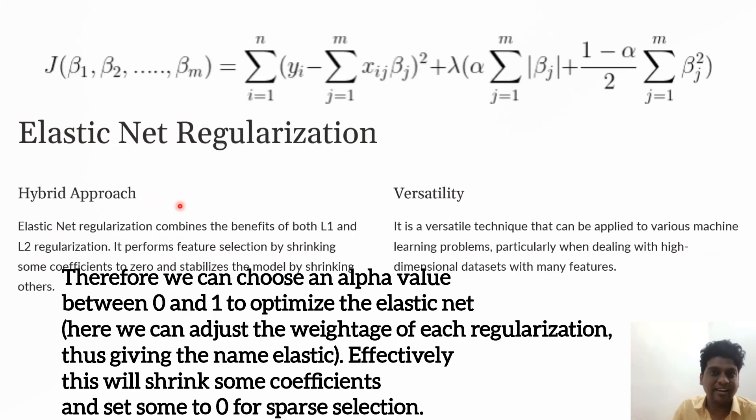Elastic Net regularization combines L1 and L2 methods, performing feature selection by shrinking some coefficients to zero while stabilizing the model by shrinking others. It's highly versatile for dealing with high-dimensional datasets with many features.